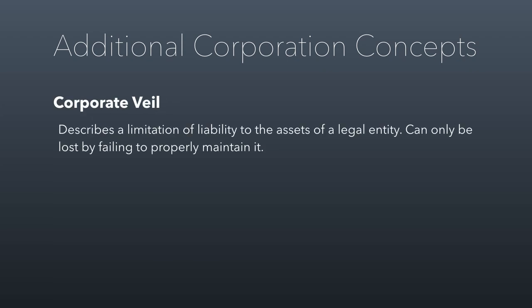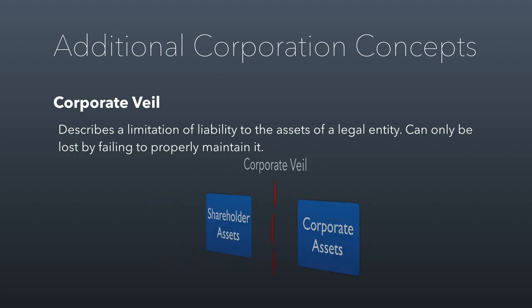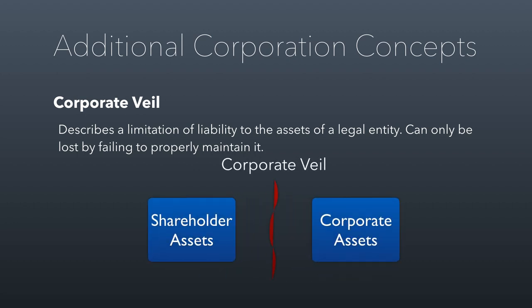Perhaps the most important concept is the corporate veil. This has been a critical legal doctrine throughout American history because it limits the liability of the people helping run the corporation. If they get sued, the person suing has to stop at the assets of the corporation — you can't get access to the personal assets of a typical employee, for example. The corporate veil creates a barrier between the shareholders', employees', or board members' personal assets and the company's assets.